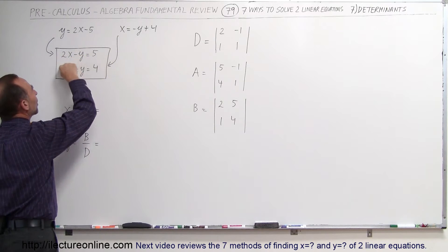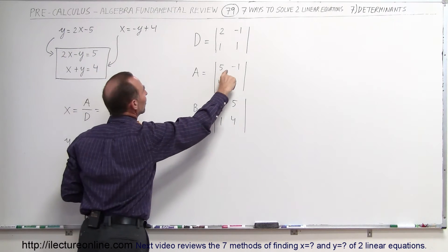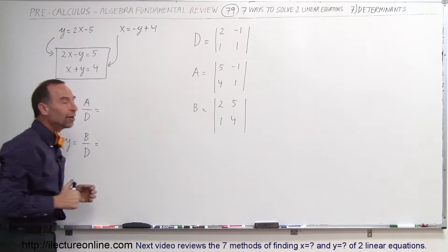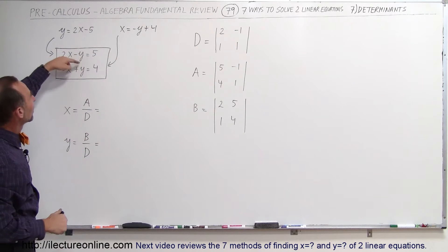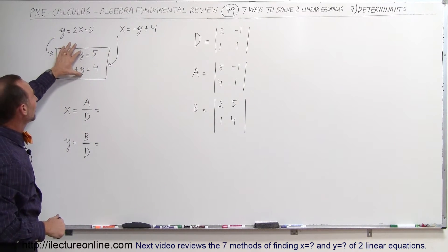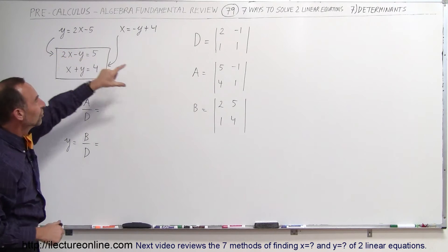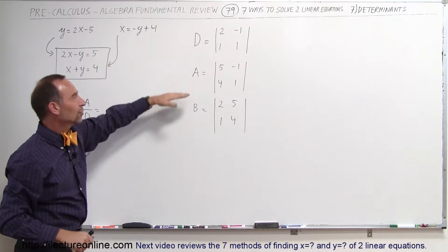So instead of 2 we get 5, instead of 1 we get 4, right like this. And then you leave the coefficients of the y values or the y terms. You keep those coefficients the same, minus 1 and 1. That gives you your second determinant.